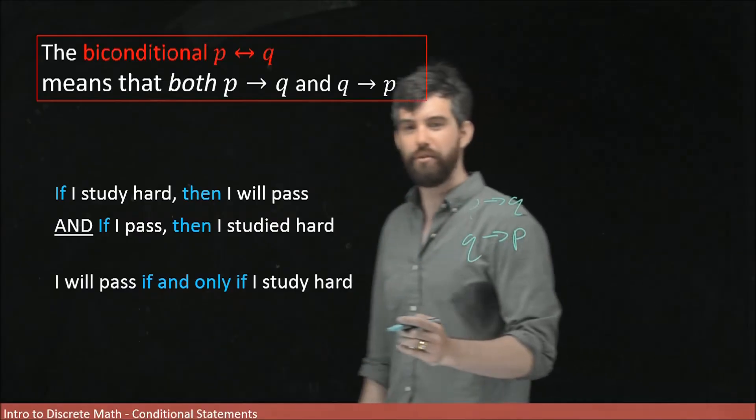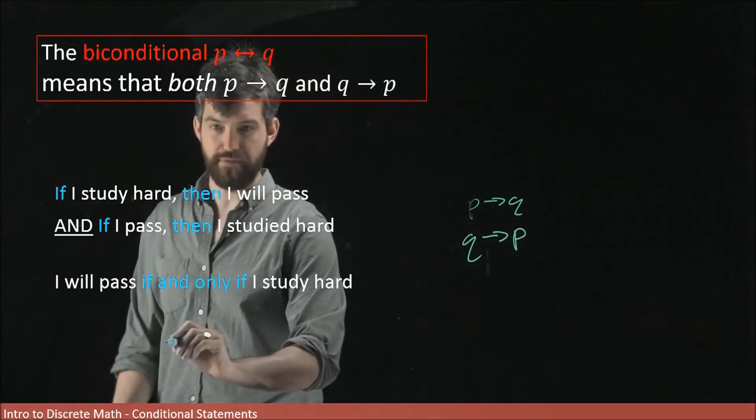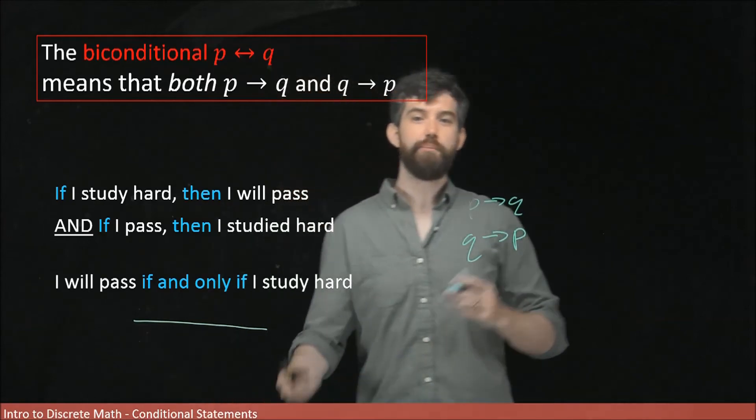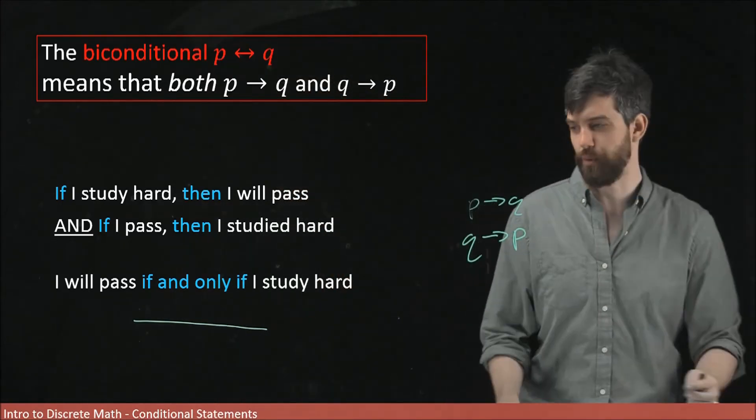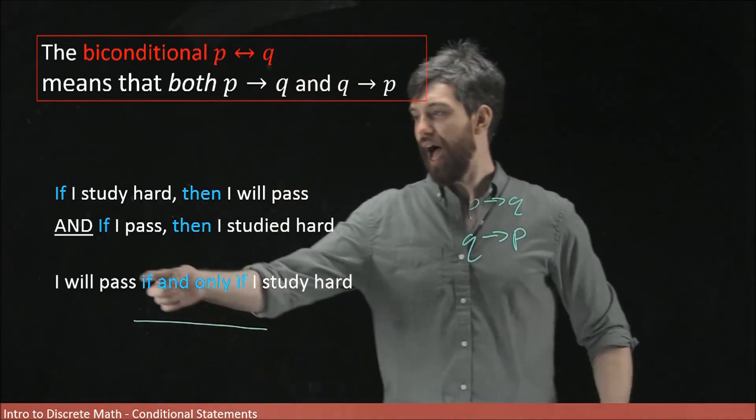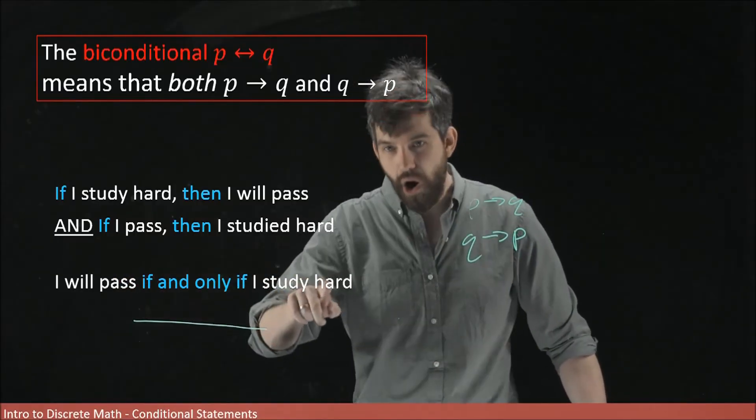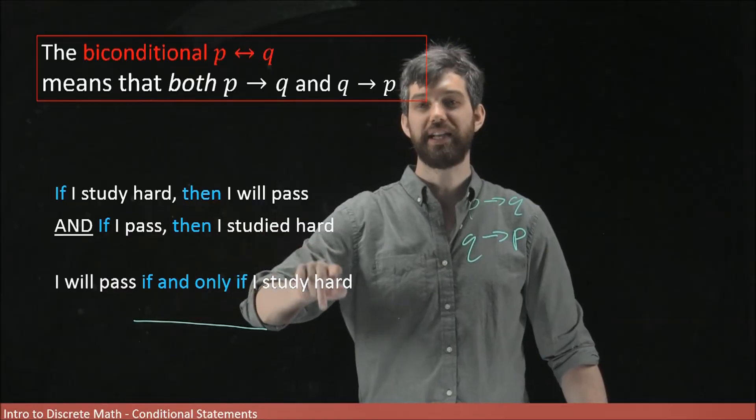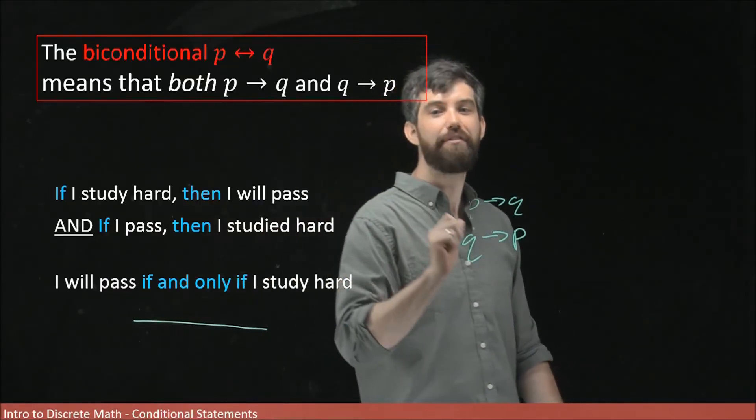So whenever we write that, whenever we say this sort of if and only if thing here, this is a way of saying that both directions are going to be true. It's a way of saying, if I study hard, then I will pass. And if I passed, then I study hard. That's what I have here.